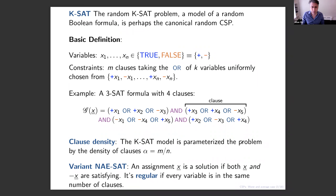For instance, if you take a random solution, each variable is equally likely to be true or false, because if X is a solution then not-X is also a solution. To make things even more homogeneous, we'll look at the regular version of NAE-SAT, where every variable is in the same number of clauses. This is the analog of looking at a random regular graph rather than an Erdős–Rényi random graph.